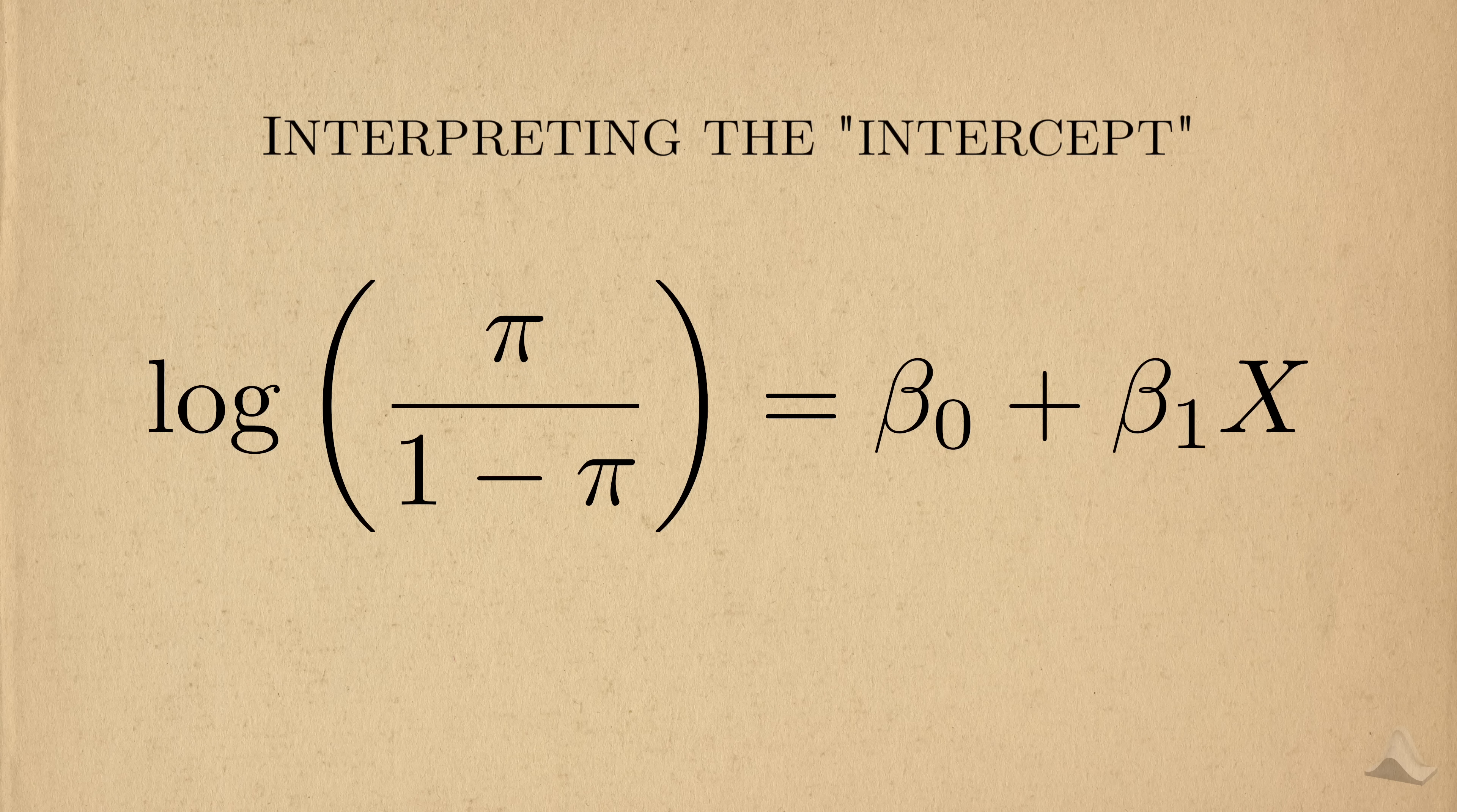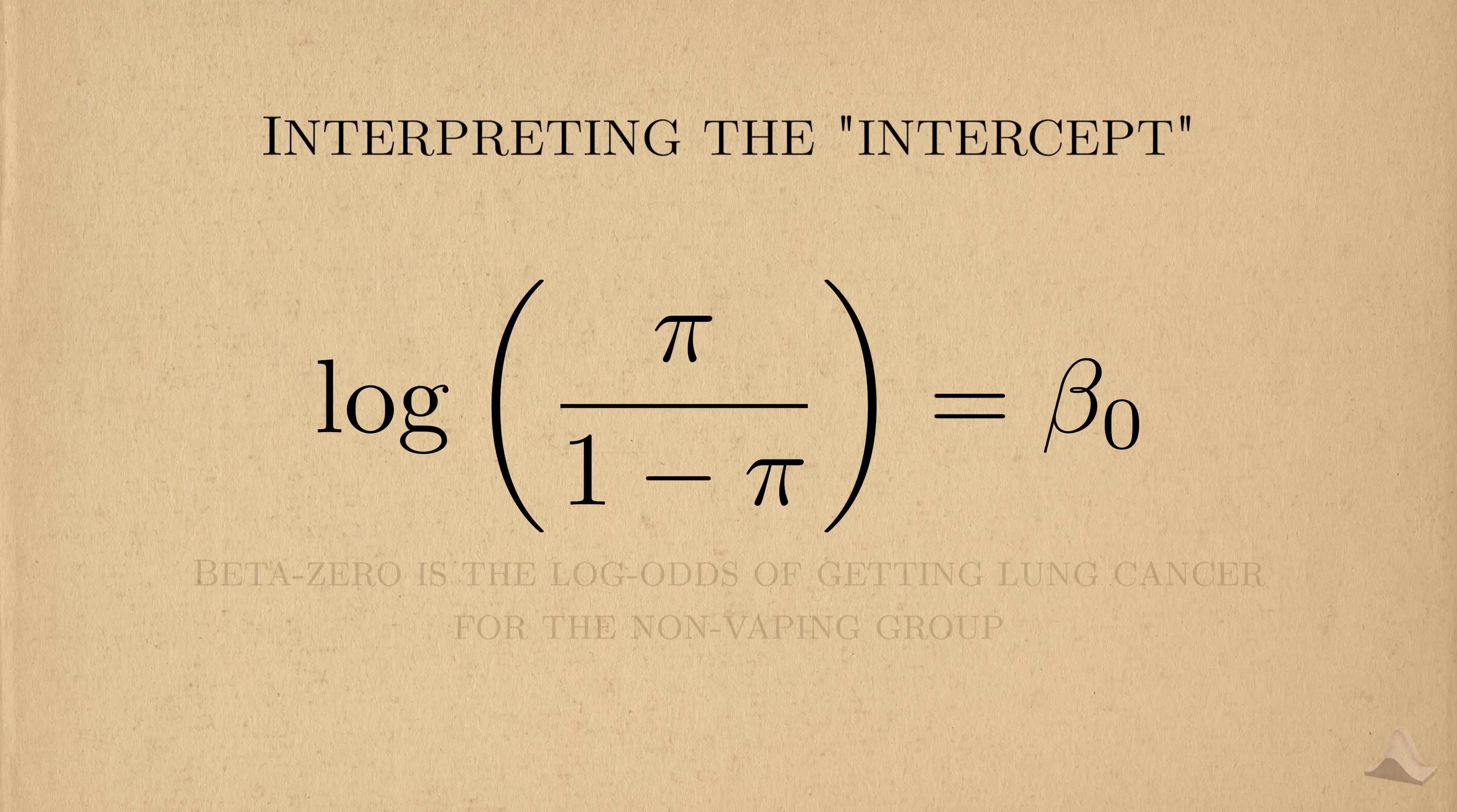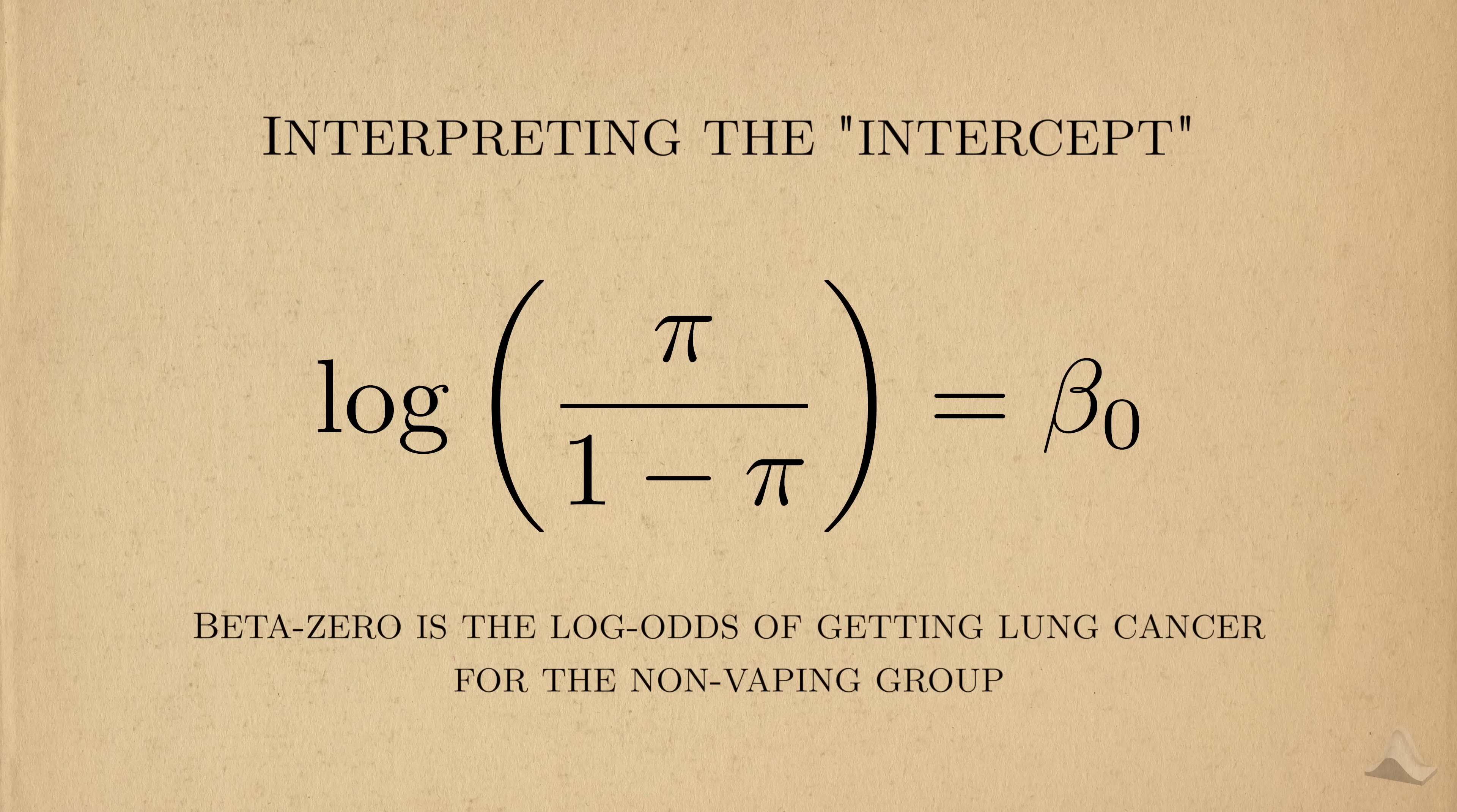When looking at someone in the non-vaping group, x equals 0, so beta 1 disappears from the model. Therefore, beta 0 represents the log odds of getting lung cancer for someone in the non-vaping group.